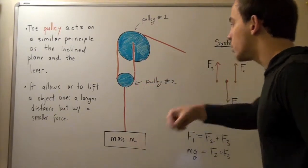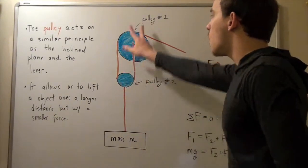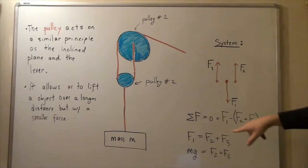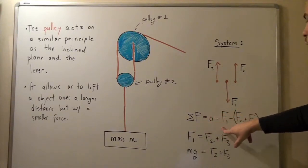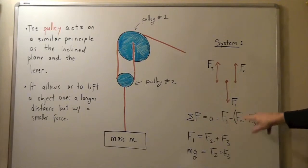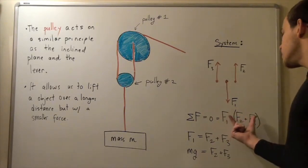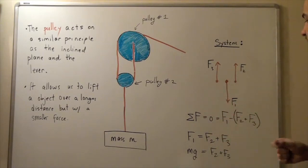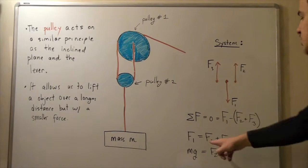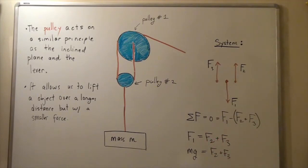So the force going downward is positive. The two forces going upward are negative. So, zero net force is equal. Zero equals force one minus, in parentheses, force two plus force three. So let's bring the forces on one side and force number one on the other side. So we get force one equals force two plus force three.